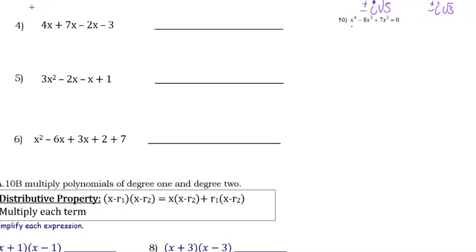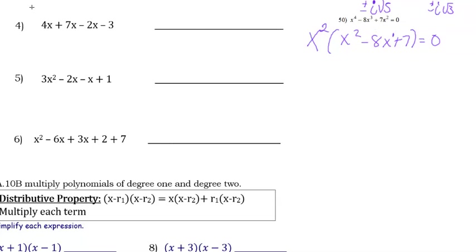Let's do number 50: x⁴ − 8x³ + 7x² = 0. All terms have at least x², so we can factor out x². Removing x²: x⁴ becomes x², x³ becomes x¹, and x² becomes 1 (the x² cancels). So we get x²(x² − 8x + 7) = 0.